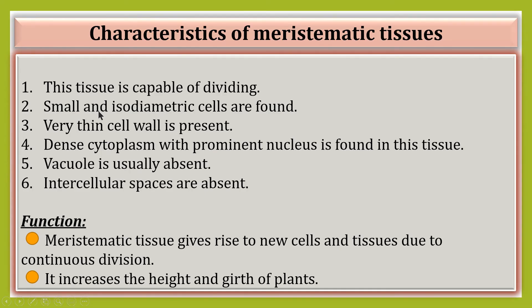This is the written description about the characteristics of meristematic tissue. Now, the functions of meristematic tissues: meristematic tissue gives rise to new cells and tissues. Due to continuous division, it increases the height and girth of plants.